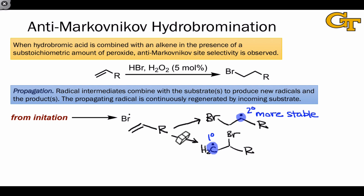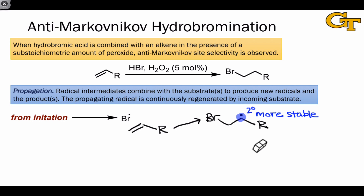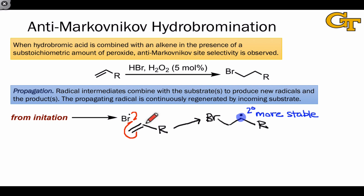This means that the mechanistic pathway proceeding through the secondary radical is lower in energy — both in an activation energy sense and in a thermodynamic sense — than the pathway involving the primary radical. And this is why anti-Markovnikov selectivity is observed in this reaction. Bromine forms a bond to the less substituted carbon of the alkene so that radical character ends up on the more substituted carbon.